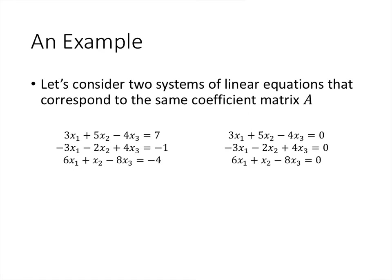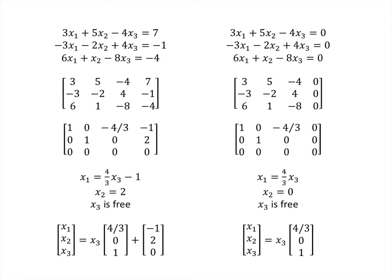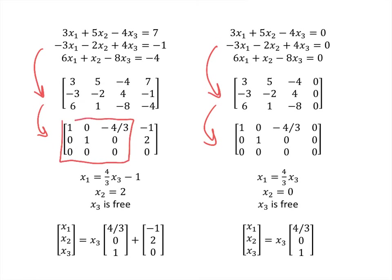To see how this works, we'll do two systems of equations side by side. Notice that the two systems are the same except for the numbers on the right-hand side of the equal sign. The system on the left has non-zero numbers, while the system on the right is homogeneous with all zeros on the right-hand side. When we rewrite these as augmented matrices and row reduce, the coefficient portion is identical, but the last column differs.